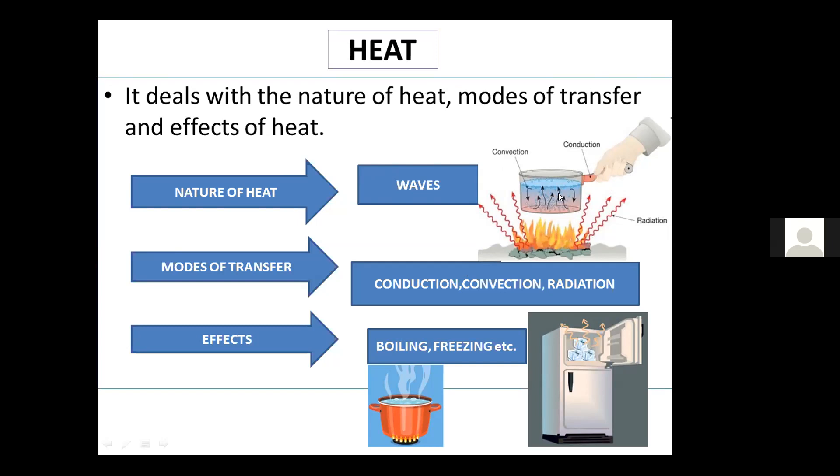The molecules of water in pan rise up when they are heated. The cool water molecules at the surface move down and take their place. The process continues till the whole water gets warm. This process is called convection. The heat waves in form of radiation are coming out from the fire.